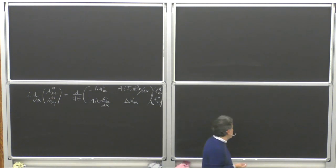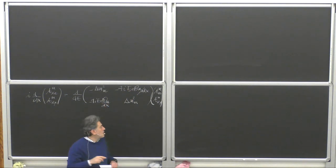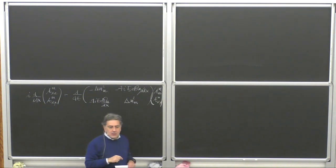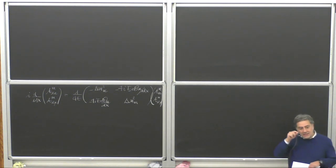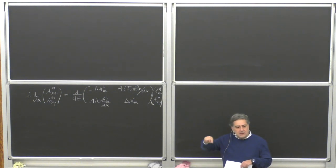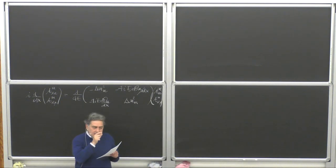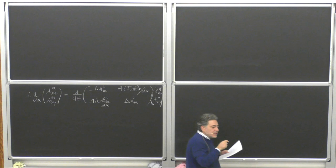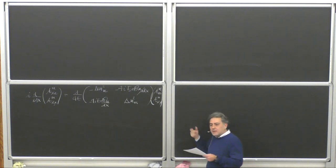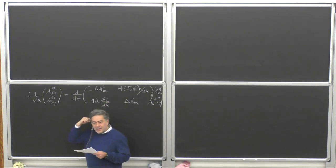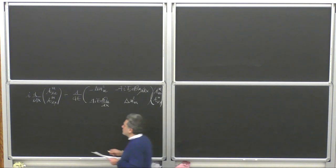At the resonance, the oscillation probability is maximum, as seen yesterday. In general, if off-diagonal terms are very small compared to the diagonal ones, the instantaneous mass eigenstates evolve adiabatically — it's like dividing the path into many steps, in each of which you consider constant matter and diagonalize the Hamiltonian to find delta m squared matter and the mixing angle in matter theta_m.